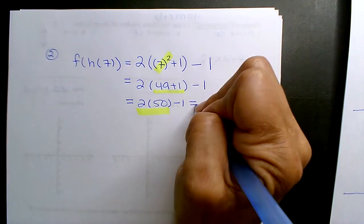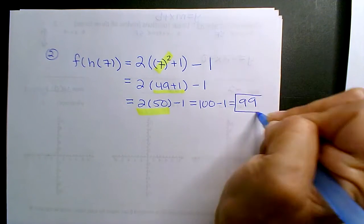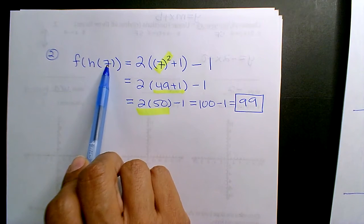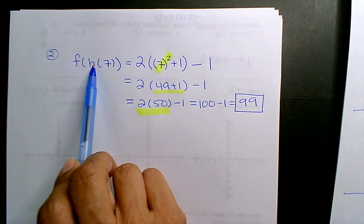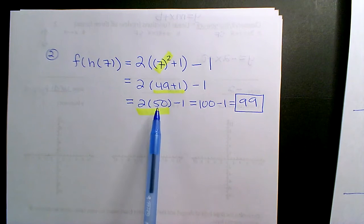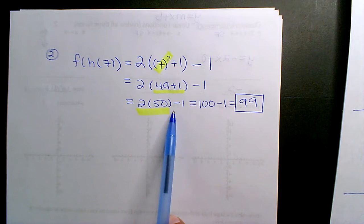So what do you get? 100 minus 1, yeah, 99. Okay, you get 99. So that is your output. Your input of 7 into the h function, and then whatever that output value is—I think it's 50—then the 50 you plug into the f function for the 2x minus 1, and that's how you get your 99.